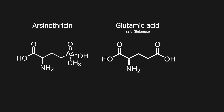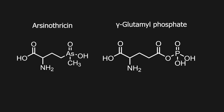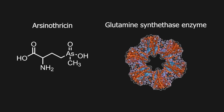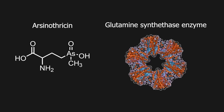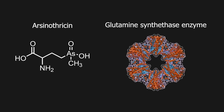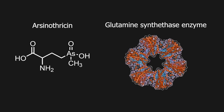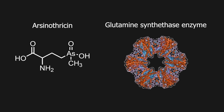More specifically, it chemically resembles the important intermediate gamma-glutamylphosphate, used in the glutamine synthetase catalytic cycle. Arsenothricin inhibits the glutamine synthetase enzyme, rendering the bacterium incapable of producing glutamine, and losing the ability to control ammonia toxicity, in the end resulting in inhibited growth or death.